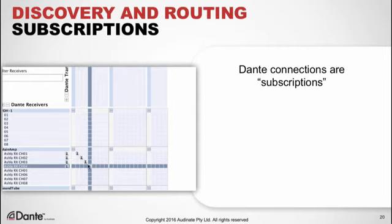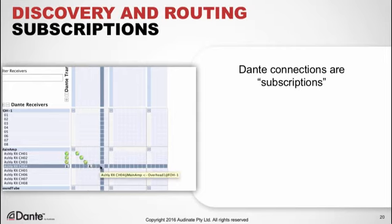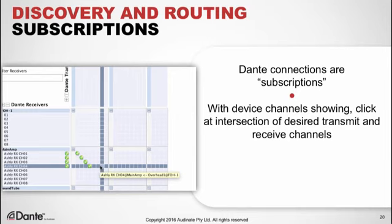To send transmitter channels from one device to another — in Dante we call these connections subscriptions — we click the plus sign to show the transmitter channels on the device we want to get audio from, then click the other plus sign on the other device to show the receiver channels as our destination. This is really just a big spreadsheet: we can see all the available channels on every device and the intersections of those channels. Remember that in order to connect, devices must be using the same sample rate and bit depth.